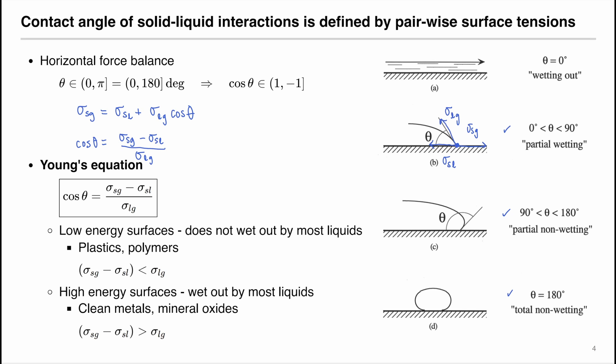The assumption is that we only consider partial wetting to total non-wetting cases — not the wetting-out case — because we are considering force balance at equilibrium. In the wetting-out case, the liquid spontaneously spreads and there is no force balance to be performed. This means the contact angle is between 0 and 180 degrees (not including 0), and cosine theta is between negative 1 and 1 (not including 1). Because of this assumption, Young's equation applies to low-energy surfaces — surfaces that do not wet out for most liquids, such as plastics and polymers.